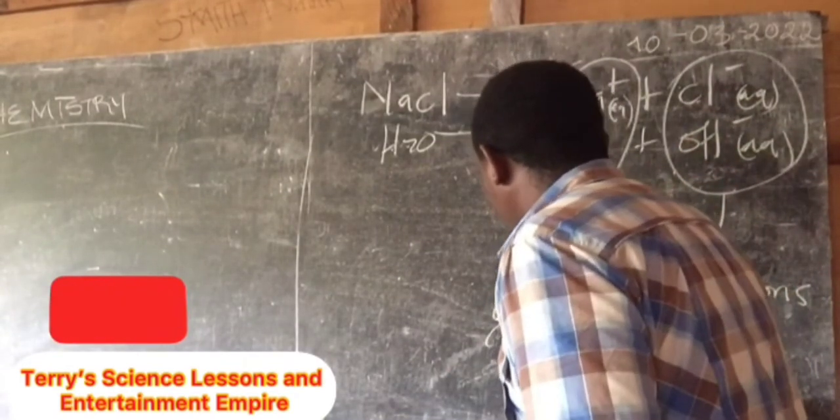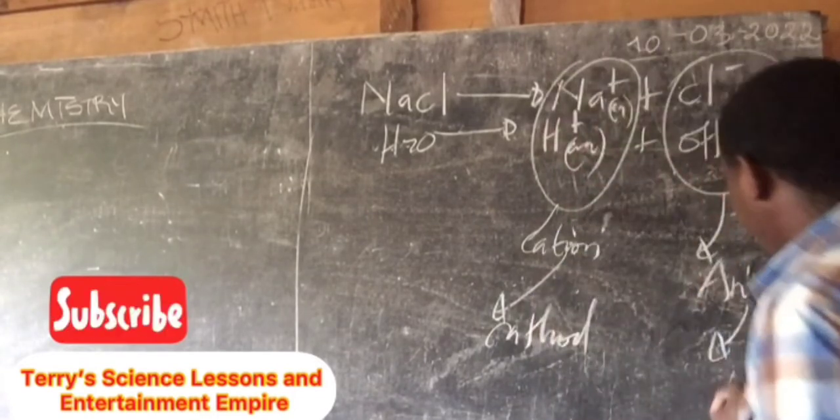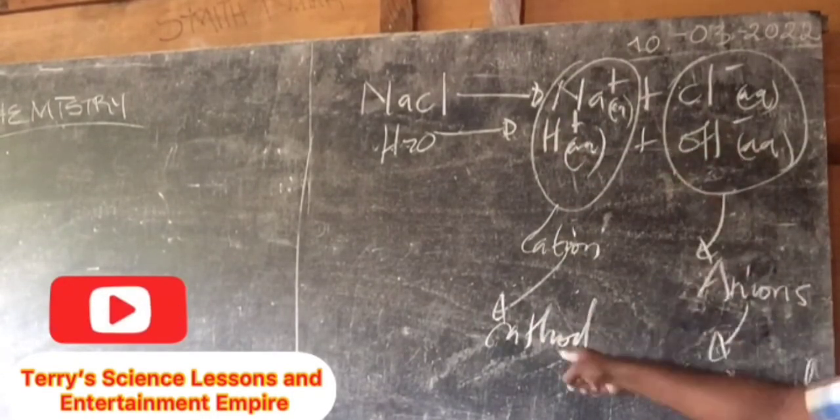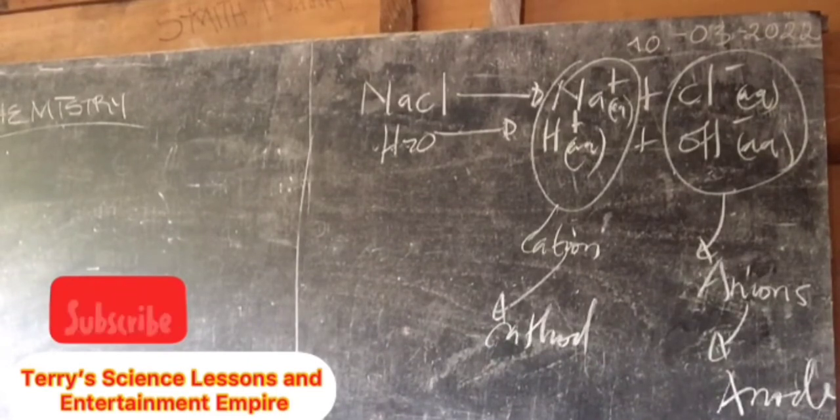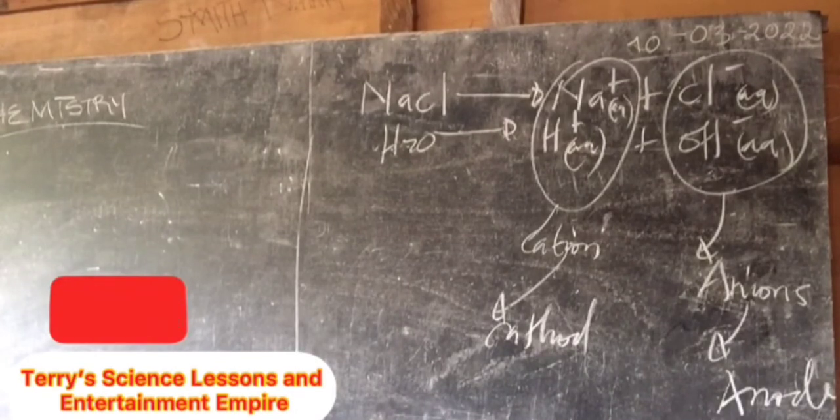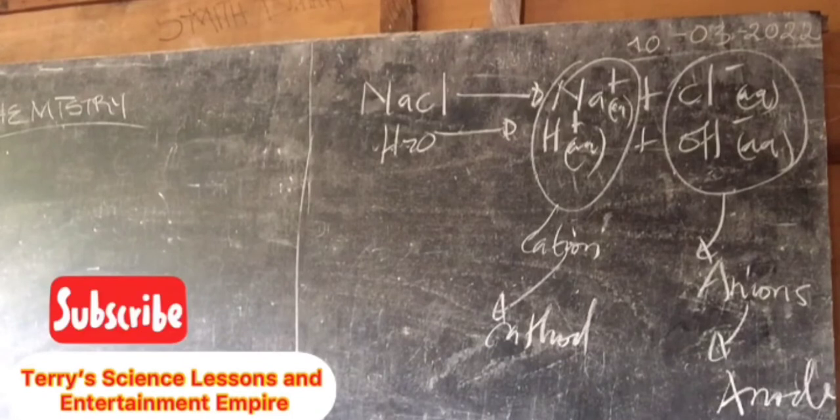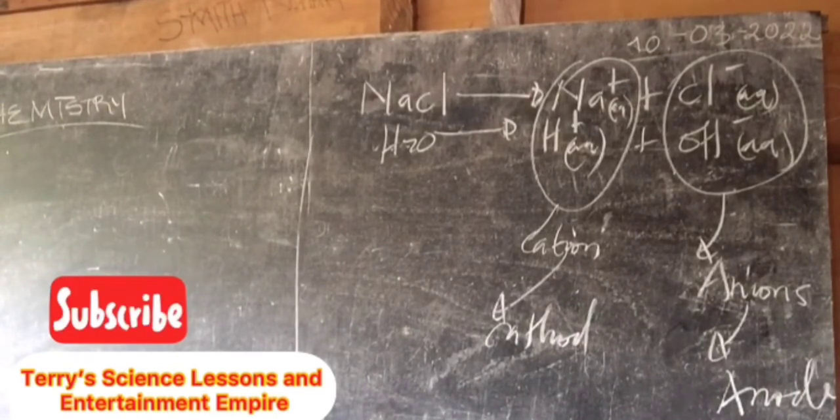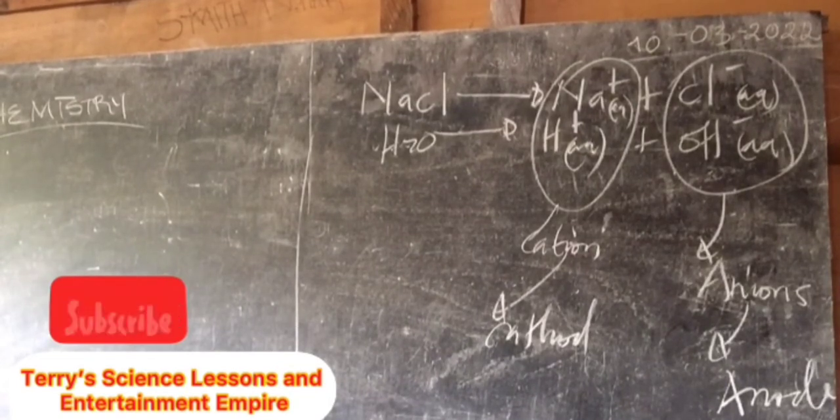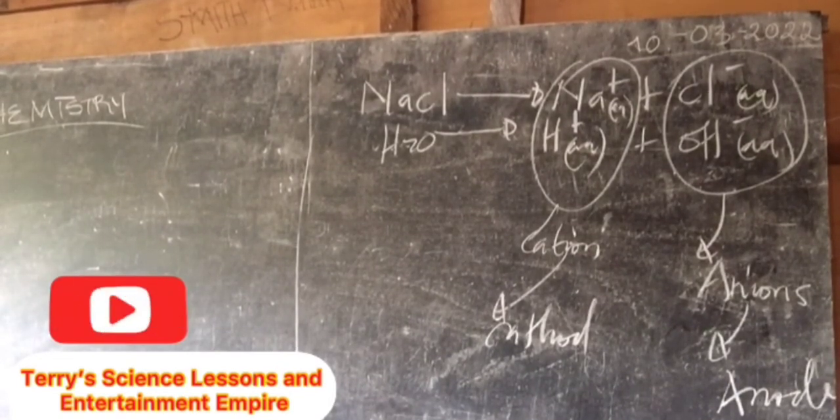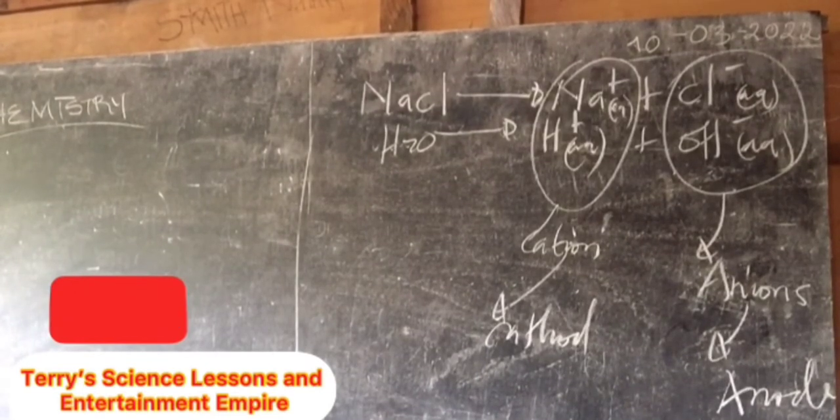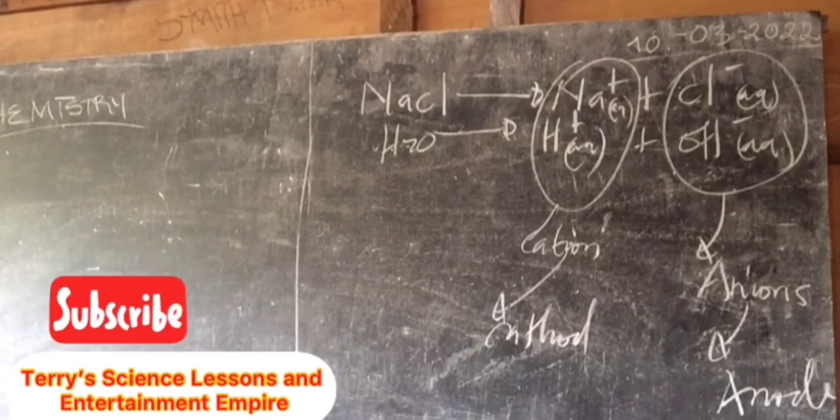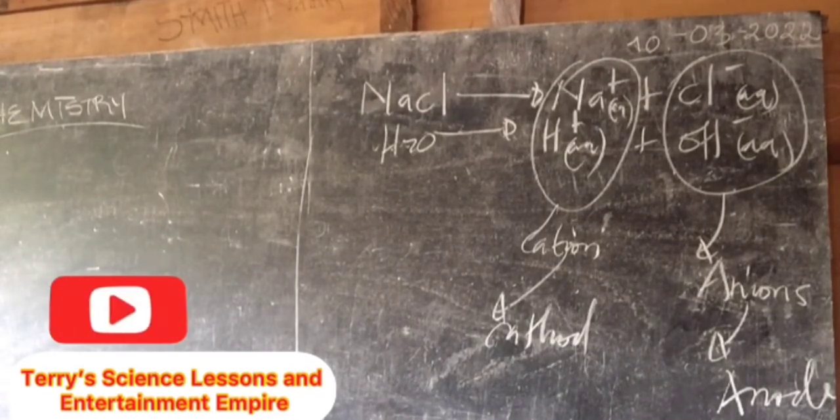If these cations migrate to the cathode and the other ions migrate to the anode, can the two ions discharge at the various cathodes and anodes? No sir, only one would discharge. This is where the mechanisms come into place. What is the first mechanism? Position of ions in the chemical series. Those that are far below will discharge in preference to those who are above. What about the nature of electrodes? There's a particular electrode that prefers particular ions to discharge. Then the concentration: if an ion is more concentrated than the other, it will discharge in preference to the other.